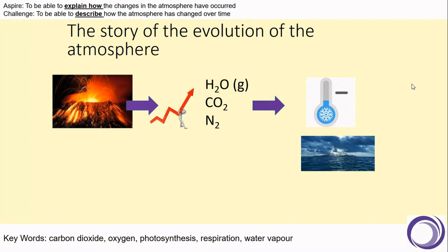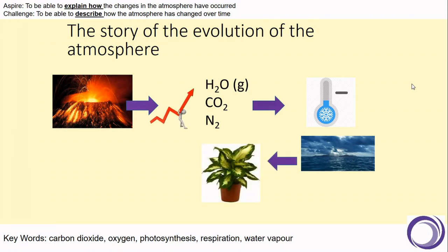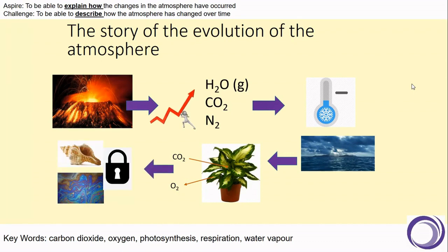Carbon dioxide dissolves into oceans. Also, if plant life evolved, then carbon dioxide would be taken in for photosynthesis, and this would also produce oxygen. Carbon can also be locked up in compounds found in sedimentary rocks made from seashells and in crude oil.